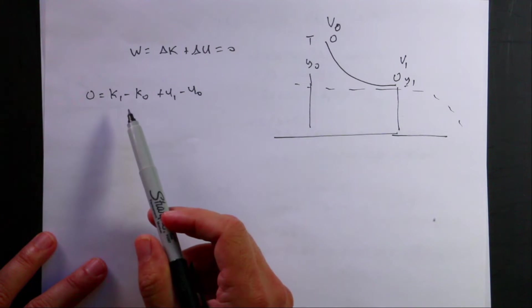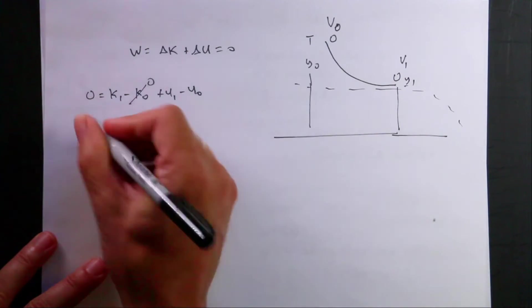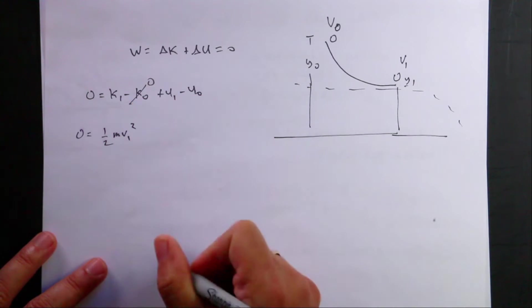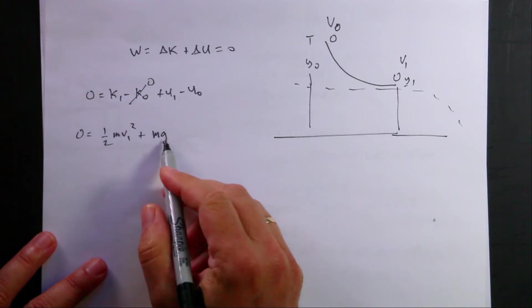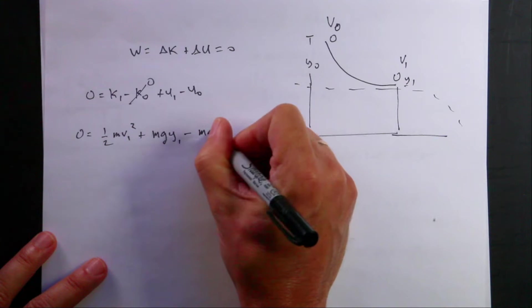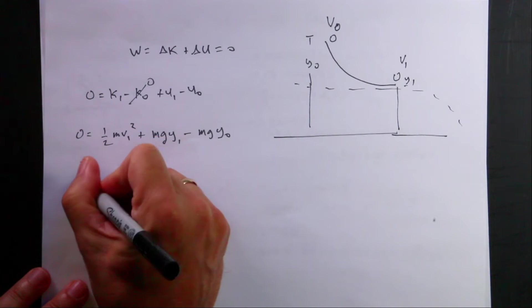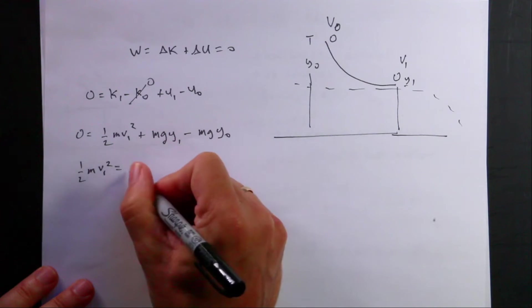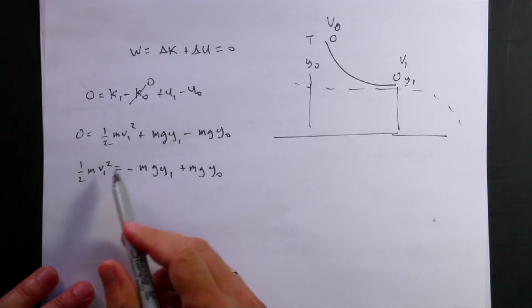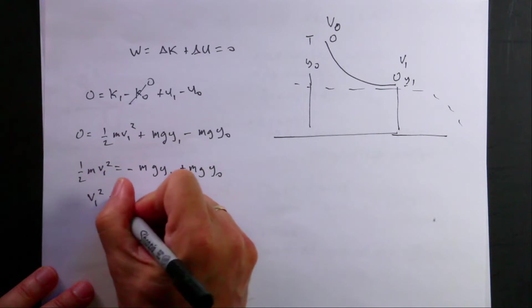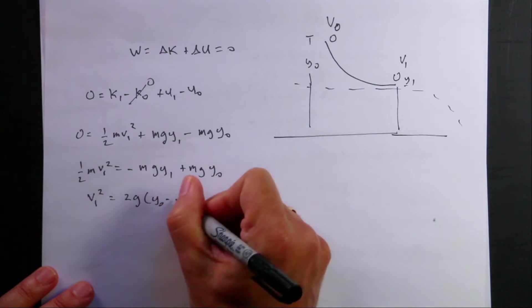So one of these values is actually going to be 0. If I release the ball from rest, then the initial kinetic energy is going to be 0. So now I have 0 equals 1 half mv1 squared. That's the kinetic energy at the end. Plus the potential at point 1 is going to be mg y1 minus mg y0. And I want to solve for v1. So let's just subtract these terms from both sides. I get 1 half mv1 squared is going to be negative mg y1 plus mg y0. I can divide both sides by m and multiply by 2 and I get v1 squared equals 2g y0 minus y1.